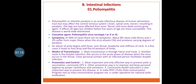Starting with the diseases which come under the intestinal infections, the first one is poliomyelitis, also called polio. Poliomyelitis or Infantile Paralysis is an acute infectious disease of the human alimentary tract, but may affect the central nervous system such as brain, spinal cord, nerves, etc., resulting in paralysis.